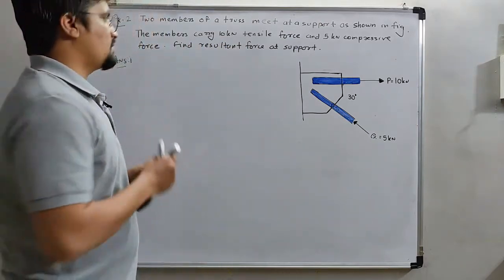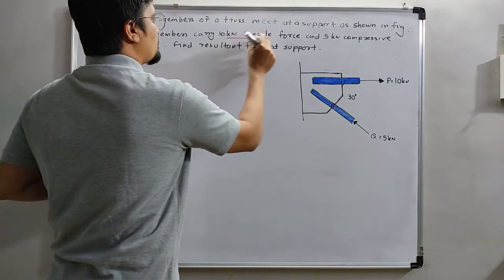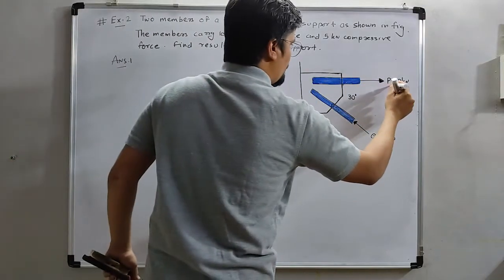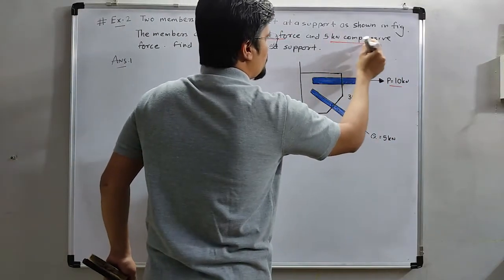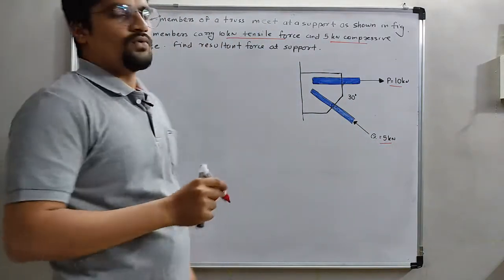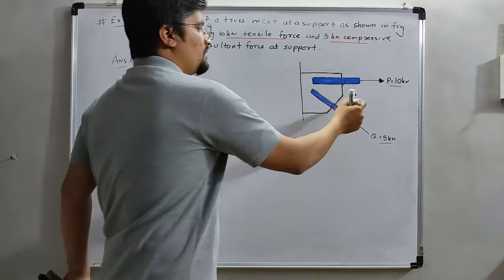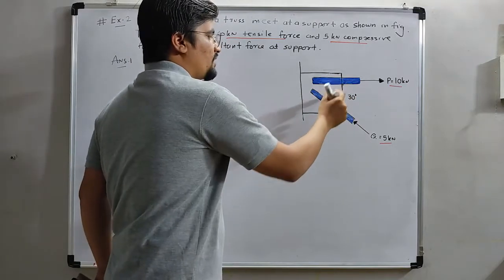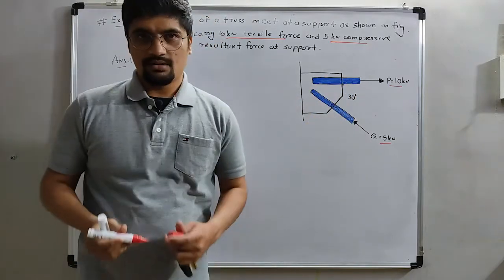What is given? The 10 kN tensile force means this, and 5 kN compressive force means this. Find the resultant force at support. Here, the 30 degree is given. It means the angle between these two is 30 degree.